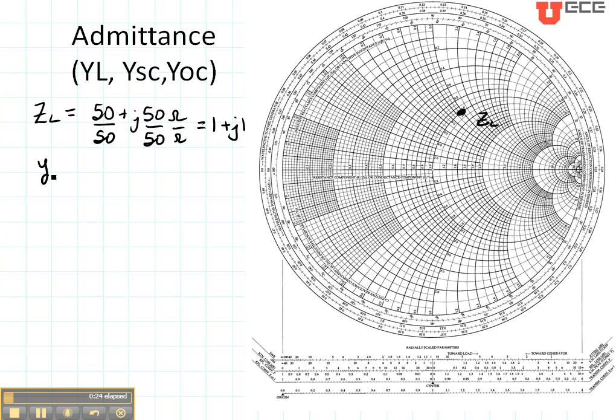If I want to find YL, that is 1 over ZL. The way we find that is called translating through the center of the Smith chart. You take your straight edge and you draw a line from the center through your point and you continue it on here. So it's one straight line right through there, right through the center of the Smith chart.